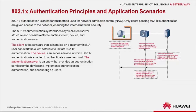The client is the software that is installed on a user terminal. The user can start the client software to initiate .1x authentication. The device is an access device in which .1x authentication is enabled to authenticate a user terminal.